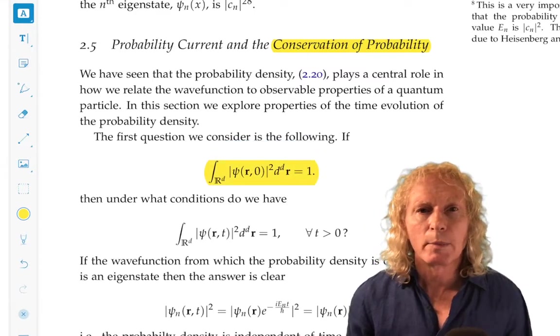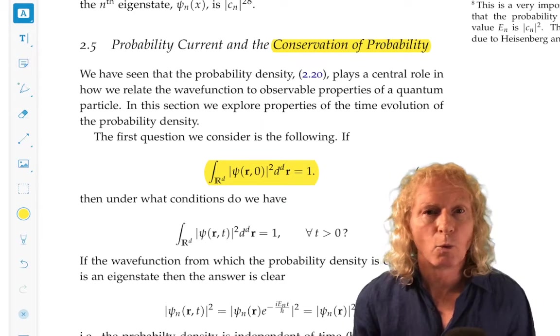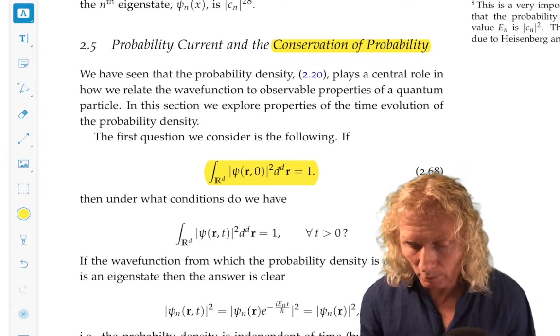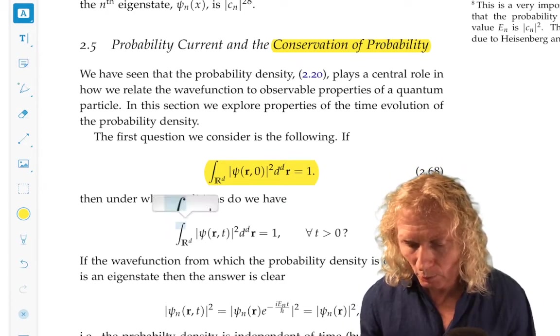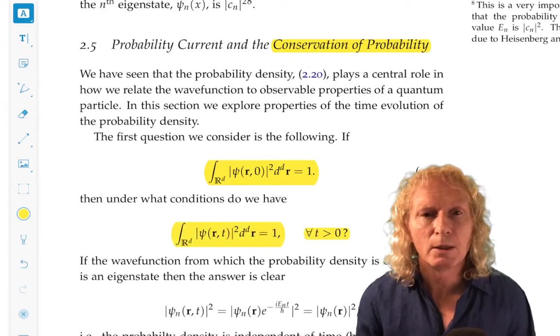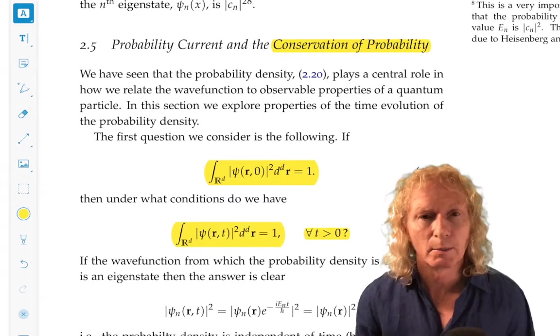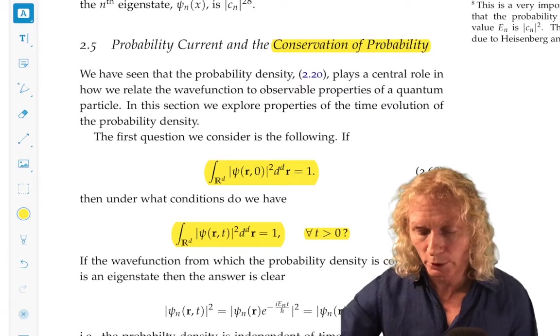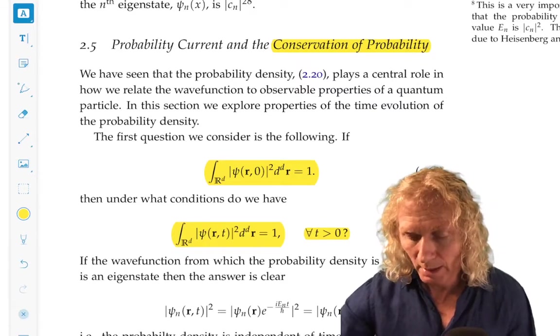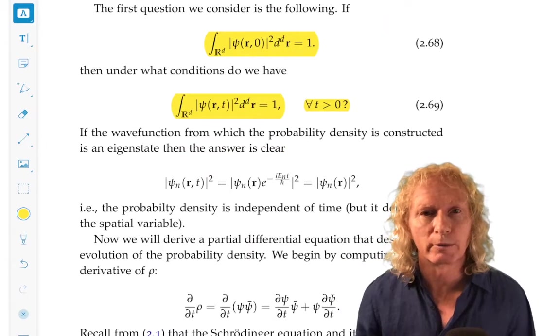In other words, if the probability is one at time zero, under what conditions does it remain one for all time later? That's what we want to show occurs as a result of the structure of the Schrödinger equation.